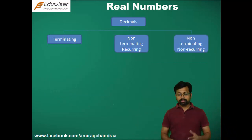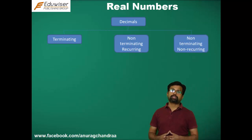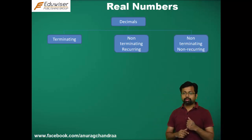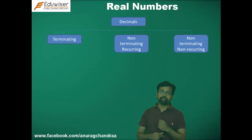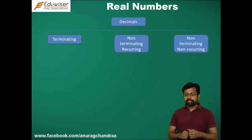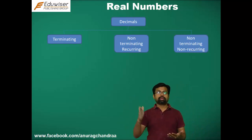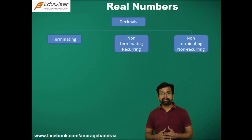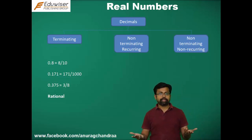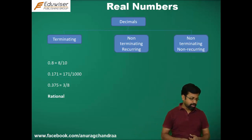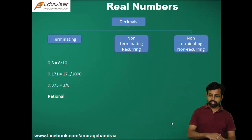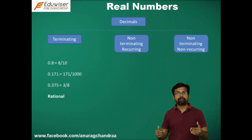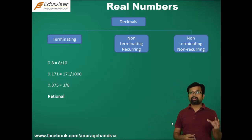The three forms of decimals are: terminating, non-terminating recurring, and non-terminating non-recurring. A terminating decimal is any decimal which terminates after a certain point. For example, 0.8 terminates after 8 — there is no number after 8, so it's a terminating decimal. Similarly, 0.171 terminates after the last one. All these numbers are rational because 0.8 can be written as 8 by 10, which is of the form P by Q where P and Q are integers and Q is not equal to 0.